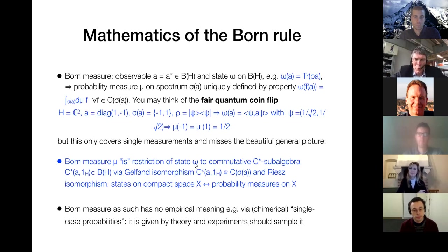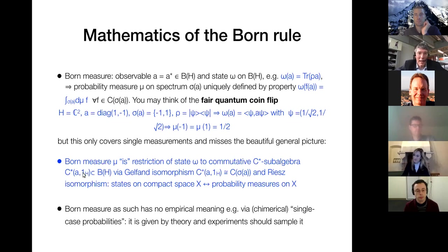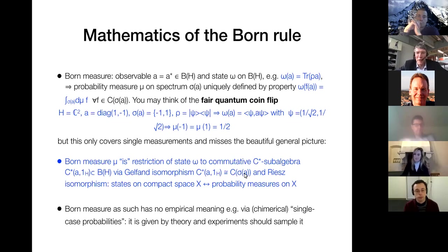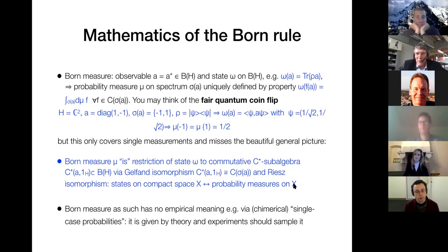If you actually restrict this state, initially defined on B(H), to the commutative algebra generated by A and the unit operator — that's a commutative isomorphism which makes this commutative C*-algebra isomorphic to the continuous functions on the spectrum of A, which is a compact set in the real numbers — and you apply the Riesz isomorphism of measure theory, stating that states on compact spaces are the same as probability measures on X, then you have it.